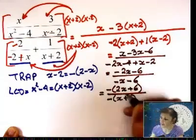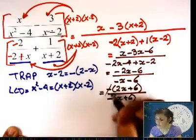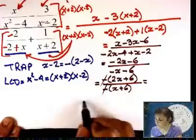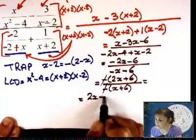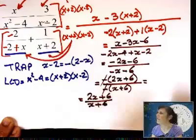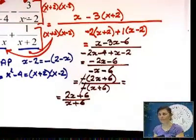2x plus 6 and here x plus 6. I cannot do x's and 6's because they are in there. But I can do this one. I can write 2x plus 6 over x plus 6. Do you see that? Very good.